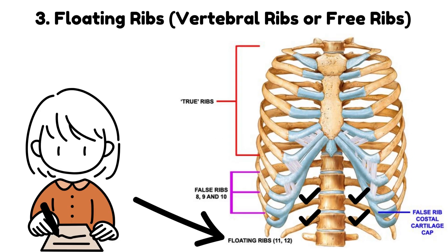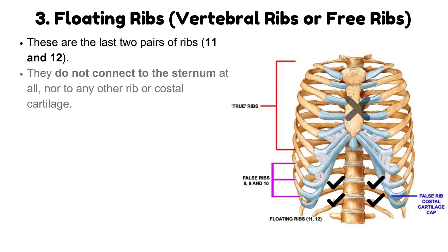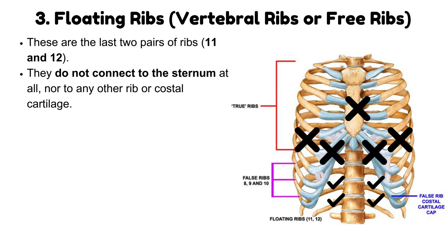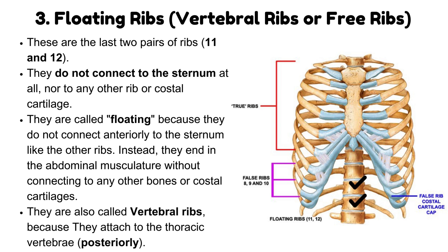Floating ribs — vertebral ribs or free ribs. These are the last two pairs of ribs, 11 and 12. They do not connect to the sternum at all, nor to any other rib or costal cartilage. They are called floating because they do not connect anteriorly to the sternum like the other ribs. Instead, they end in the abdominal musculature without connecting to any other bones or costal cartilages. They are also called vertebral ribs because they attach to the thoracic vertebrae posteriorly.